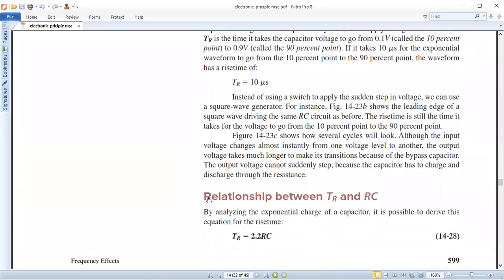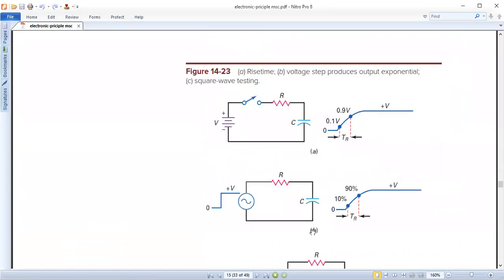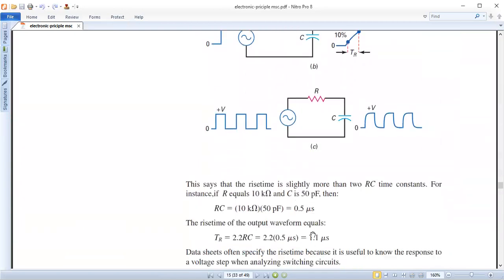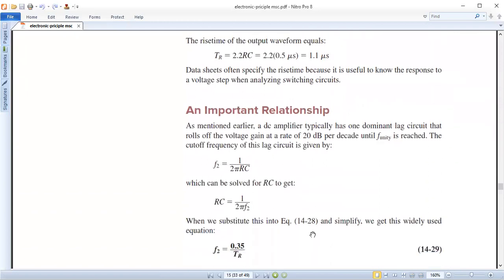So this is the time gap between the rise time and the rise time is equal to 2.2 RC. So this is the time gap between the frequency and the rise time is equal to 1 by 2 pi RC. Now RC is equal to 1 by 2 pi F2. Now RC is equal to 1 by 2 pi F2. This is the relationship with RC.